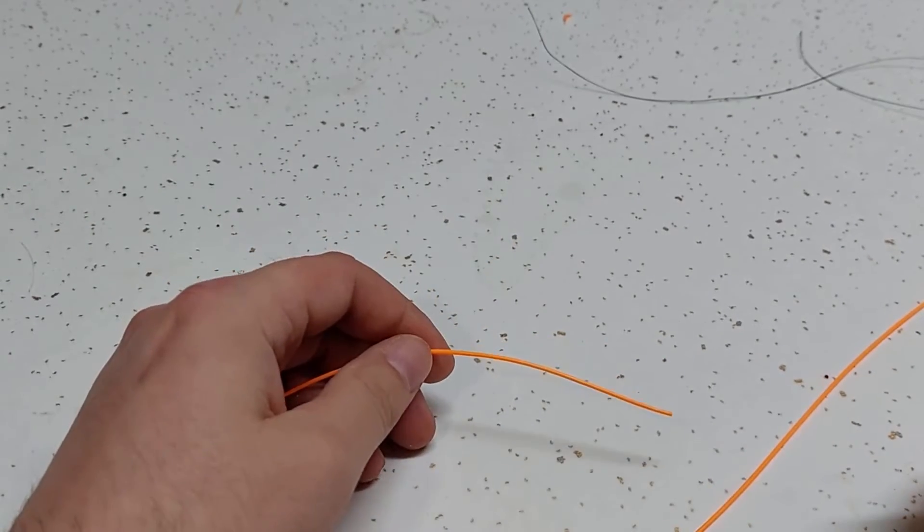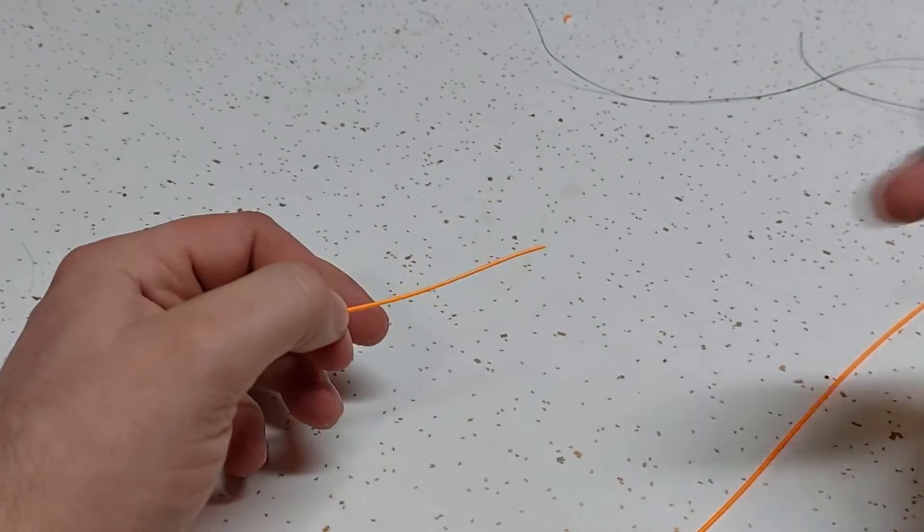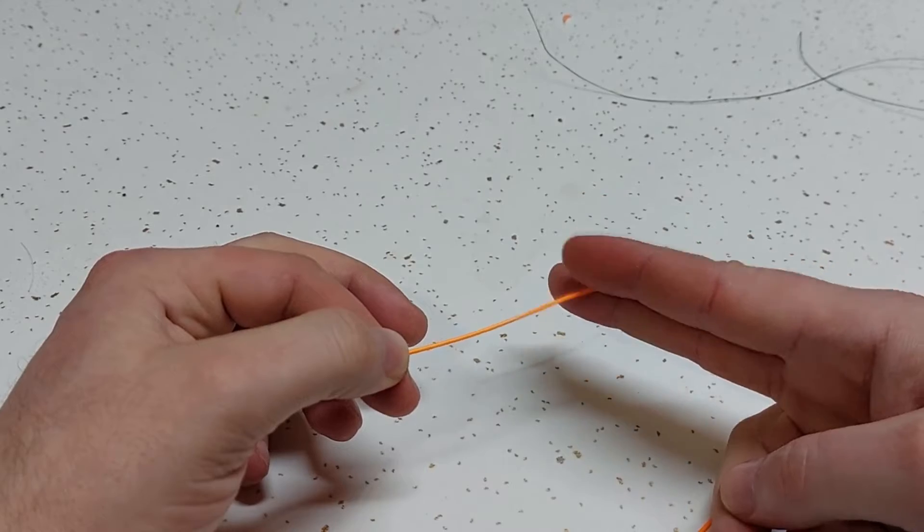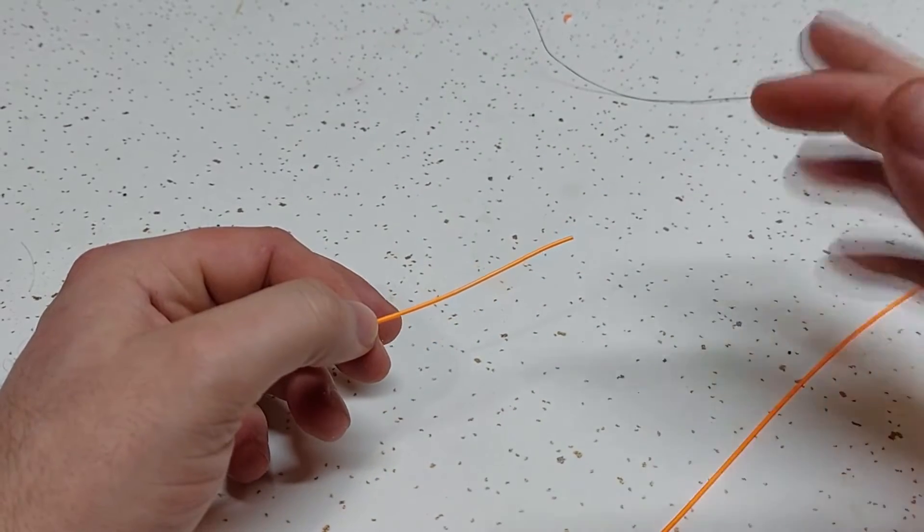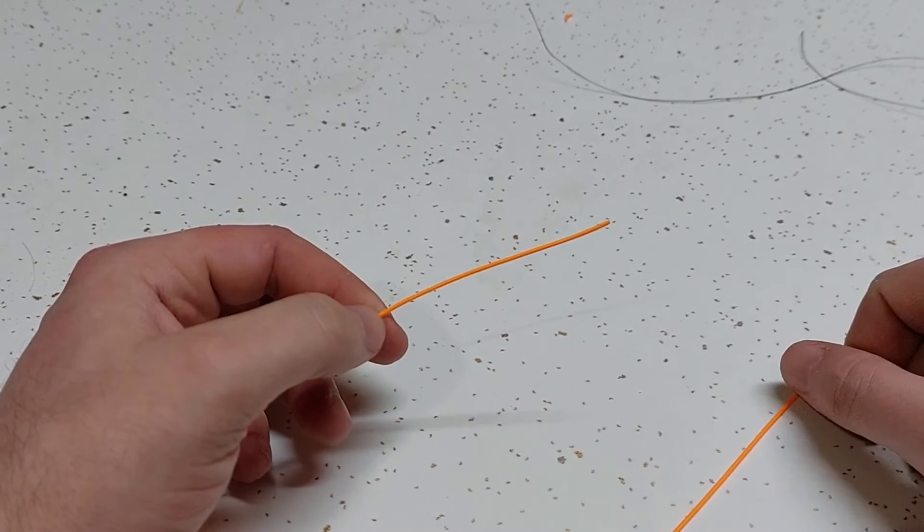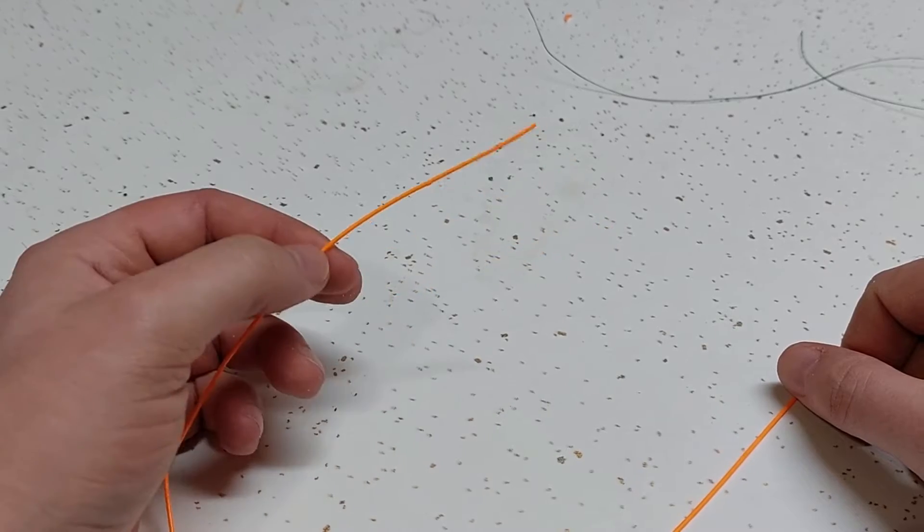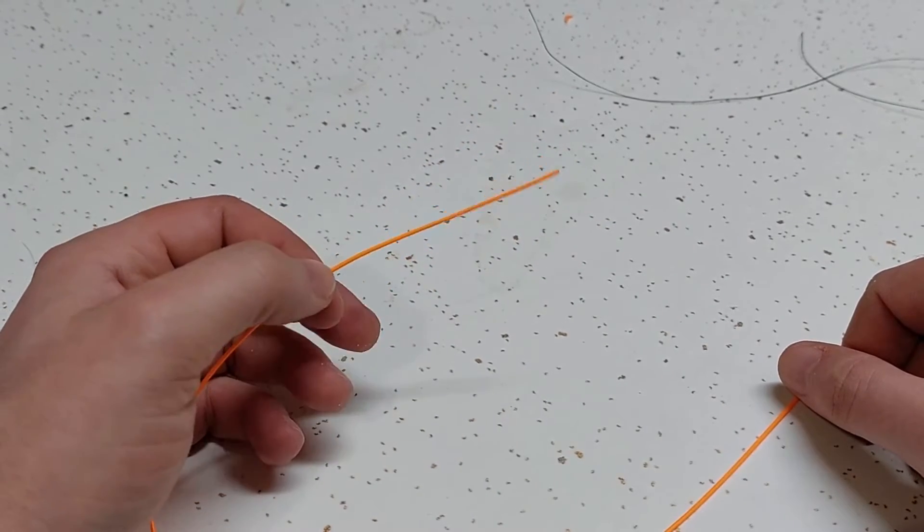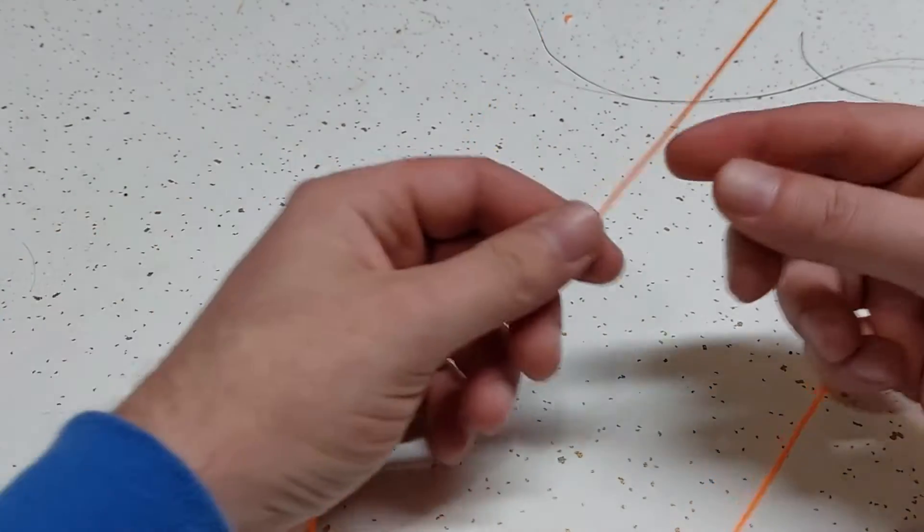All right y'all, let's get started on this fly leader. The first thing you're going to want to do is cut them funky loops off if that's what you got. Don't even worry about them things - I always cut them off as soon as I get them. I use what's called a perfection knot, or otherwise known as a flying bowler.